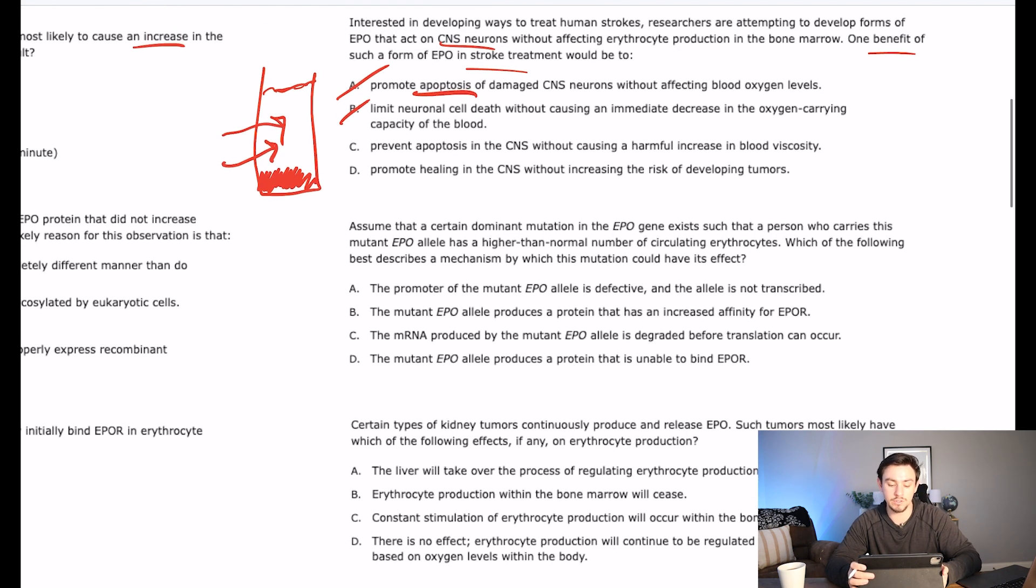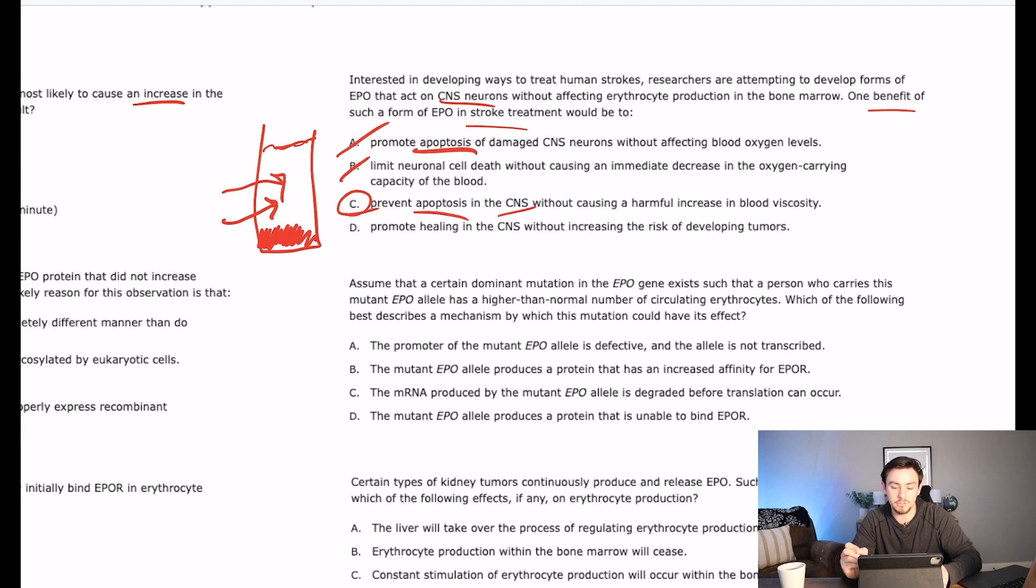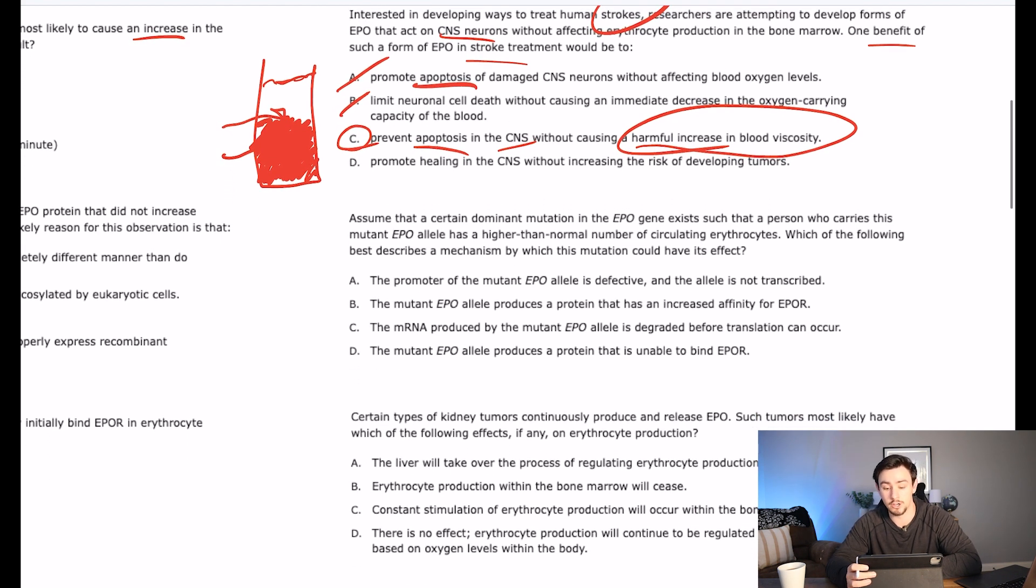C says that if we do this, then we would prevent apoptosis in the CNS without causing a harmful increase in blood viscosity. What's viscosity? It's the thickness of a liquid or a gelatinous substance. And so that's going to be the correct answer here, because we would get the benefits of preventing apoptosis in the CNS, which would be helpful for a stroke because we don't want our brains to die. But we would not cause a crazy rise in blood viscosity, because if we were to increase the percentage of this test tube that is solid red blood cells, then our blood is going to get really thick and sludgy. Our heart's going to have to push really hard. And we're going to get things like hypertension, maybe heart failure, a lot of signs of something you'll learn called polycythemia vera. C is a good answer choice.